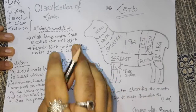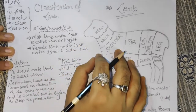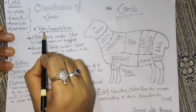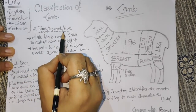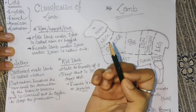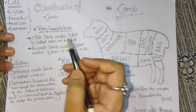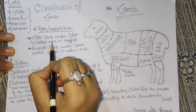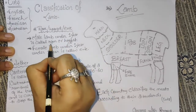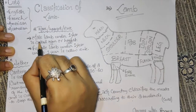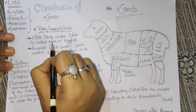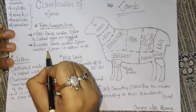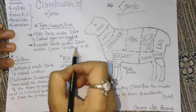Now we start with something important. Before the lamb cuts, let us cover this. We have Ram, Hoggett, and Ewe. A male lamb under one year is called Ram or Hoggett. A female lamb under one year is called Ewe.